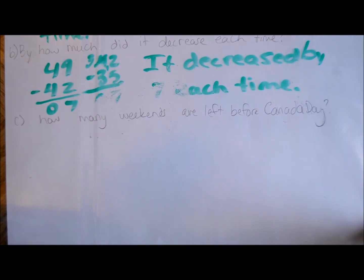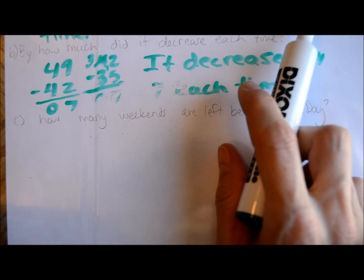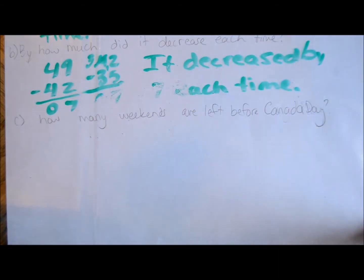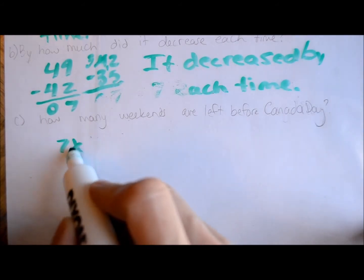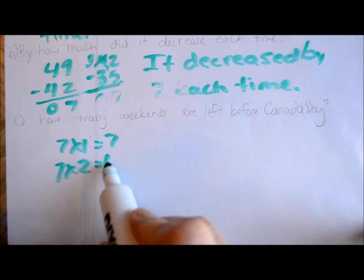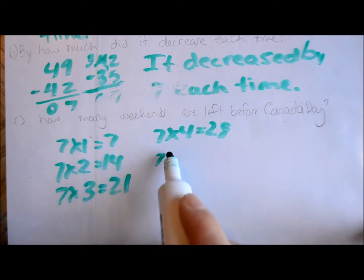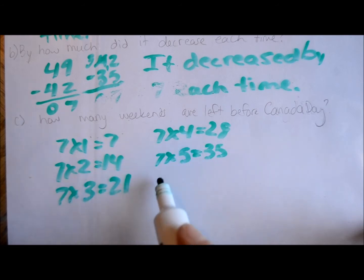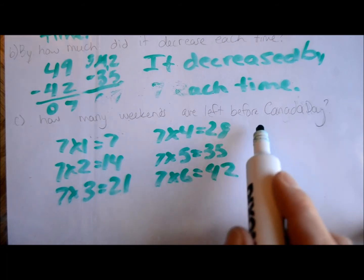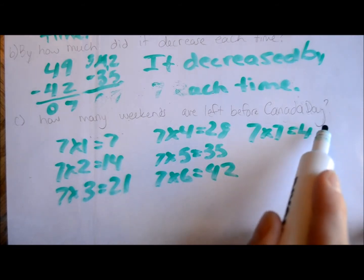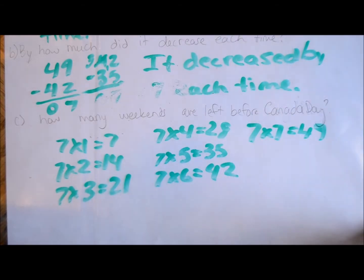Another way to tackle this: the way I filled in the chart so quickly is because it's the seven times tables. 49, 42, 35 — it's just the seven times tables. Seven times one is 7, seven times two is 14, seven times three is 21, seven times four is 28, seven times five is 35, seven times six is 42, seven times seven is 49 — and that's the number the pattern starts with.